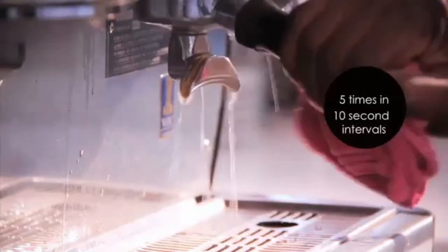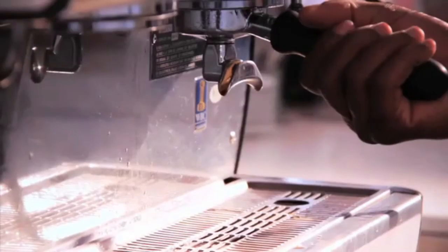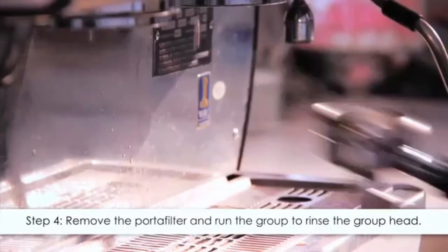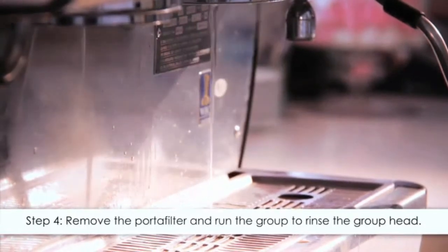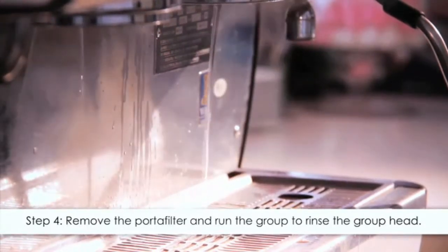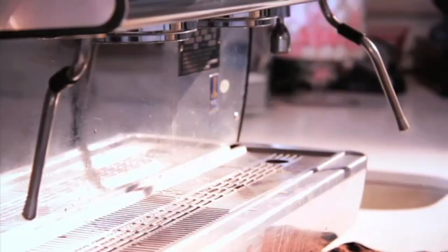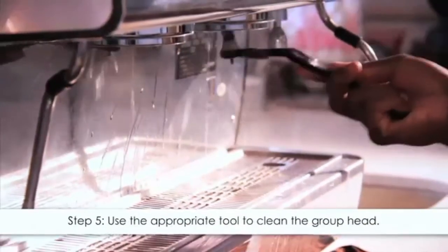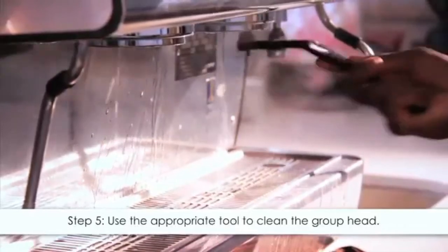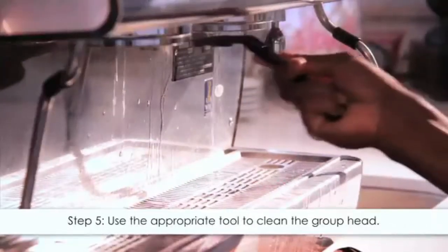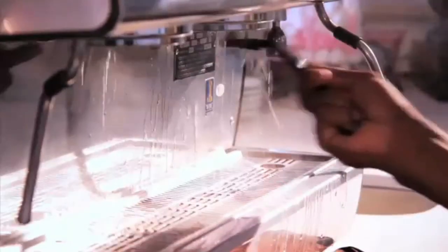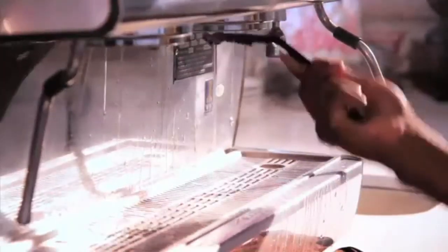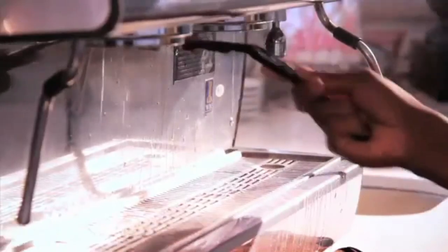Step four: remove the portafilter, throw away the leftover bits, and then run the group again to rinse the group head. Step five: use the appropriate coffee tool provided to get rid of any residual oils or loose grinds in and around the group head. Do this by running the water and using the brush to clean around the group head. It needs to be spotlessly clean.